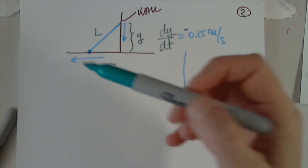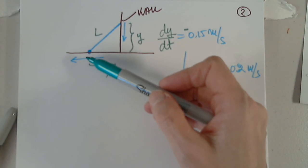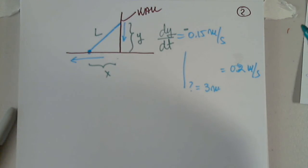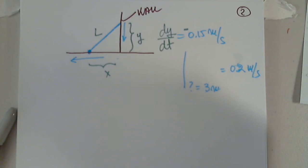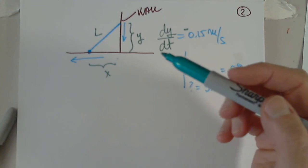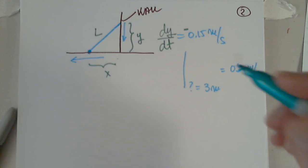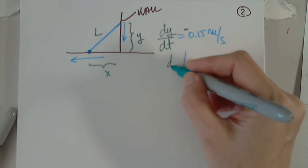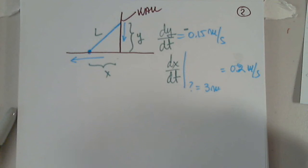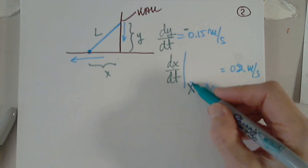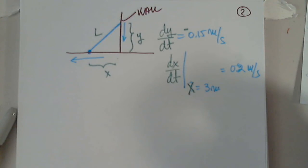At the moment when the bottom is 3 meters from the wall, I cannot consider this 3 meters, okay? It slides away from the wall at a rate of 0.2 meters per second. So what is this? The answer is it's dx/dt when x is 3 meters. How long is the ladder?